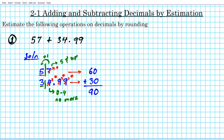This helps us to see the beauty of knowing how to add and subtract decimals by rounding, because it's easier to compute mentally when you have the numbers rounded. And that's basically the whole idea behind this lesson. Let's try another example — number two. Let's do a subtraction problem: 32.9 minus 4.8.